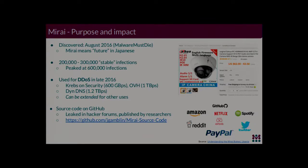Next, OVH was targeted with a one terabit per second DDoS attack. What's crazy is that OVH gets DDoSed around a hundred to a thousand times a day, but this attack stood out by far. Next was DynaDNS — they provide DNS hosting solutions for all major IT companies. I remember one evening when I was trying to browse Reddit and pages stopped loading. I ran DIG and DNS resolution was failing. The next day I found out that one of the largest DDoS attacks ever had been performed against DynaDNS.